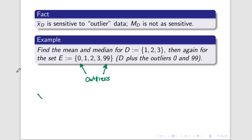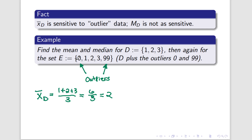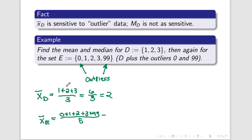So let's see. If I want to find the mean for D, I add all the data points' values together and divide by the number of data points, which gives me 6 over 3, or in other words, 2. If I do the same thing for E, I add all the data points together — which this time is a slightly longer list — and divide by the number of data points, which in this case is 5. That gives me 105 over 5, and since 105 is divisible by 5, the result is 21.